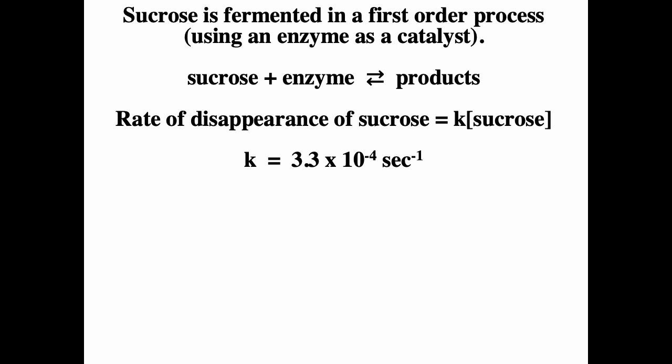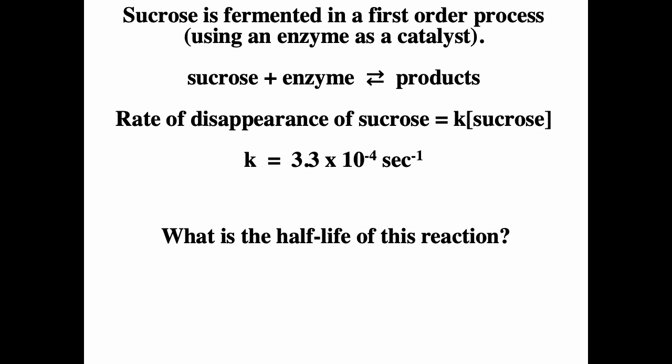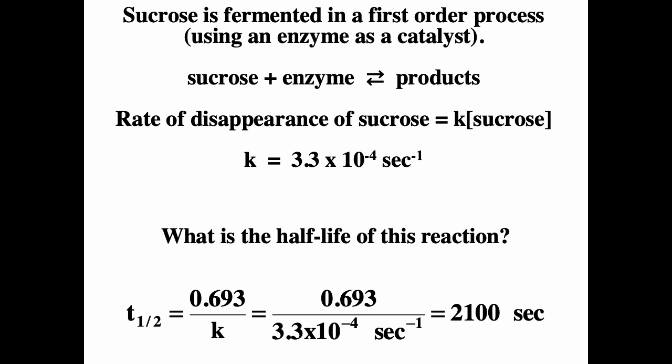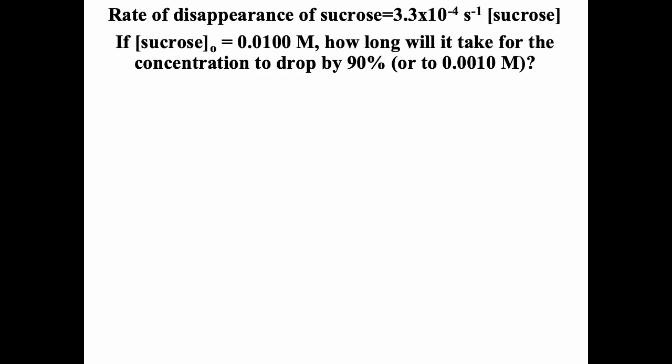Sucrose is fermented in a first-order process using an enzyme as a catalyst: sucrose plus enzyme gives products, with k = 3.3 × 10⁻⁴. To find the half-life for that reaction, we do 0.693 divided by k, which gives 2,100 seconds. If the initial concentration of sucrose is 0.01, how long will it take for the concentration to drop 90% to 0.001?